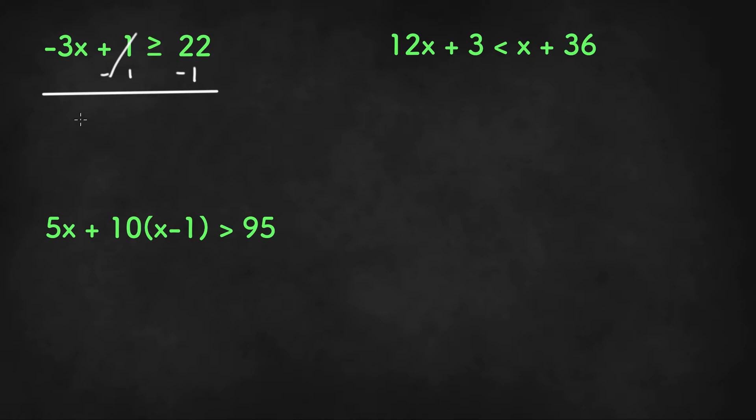To get negative 3x, and we're going to bring down the greater than or equal to, 22 minus 1 or 21.